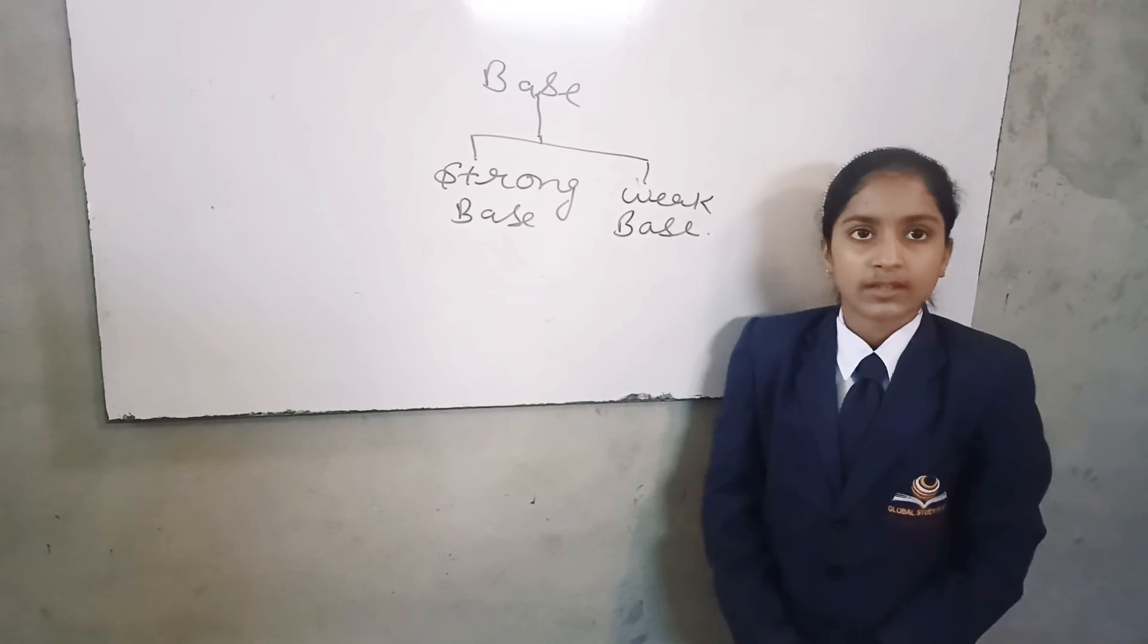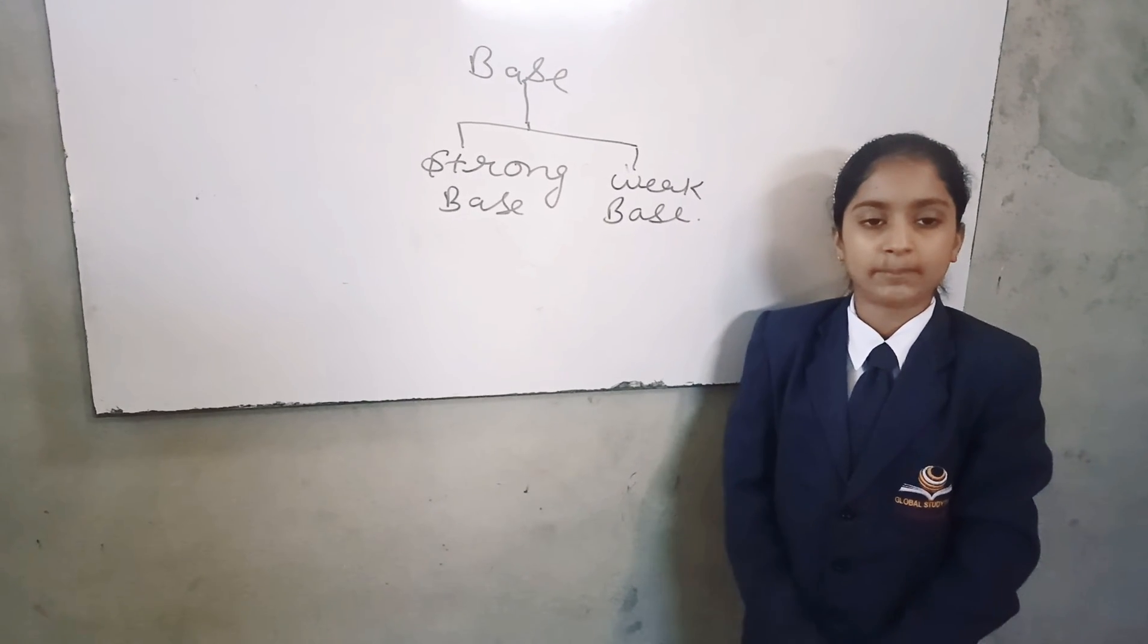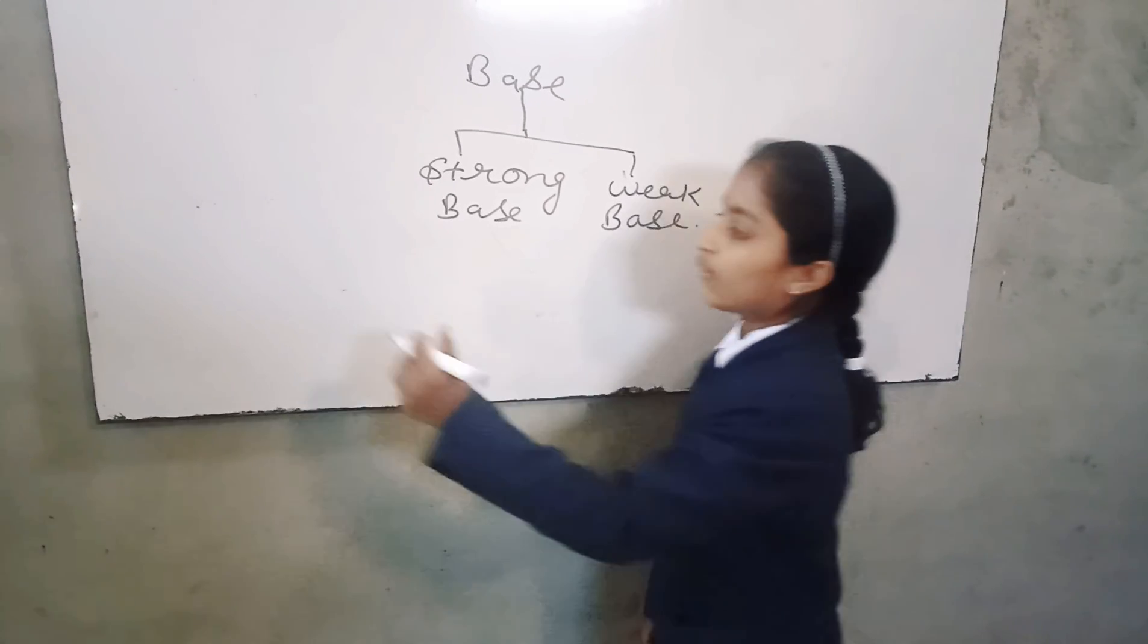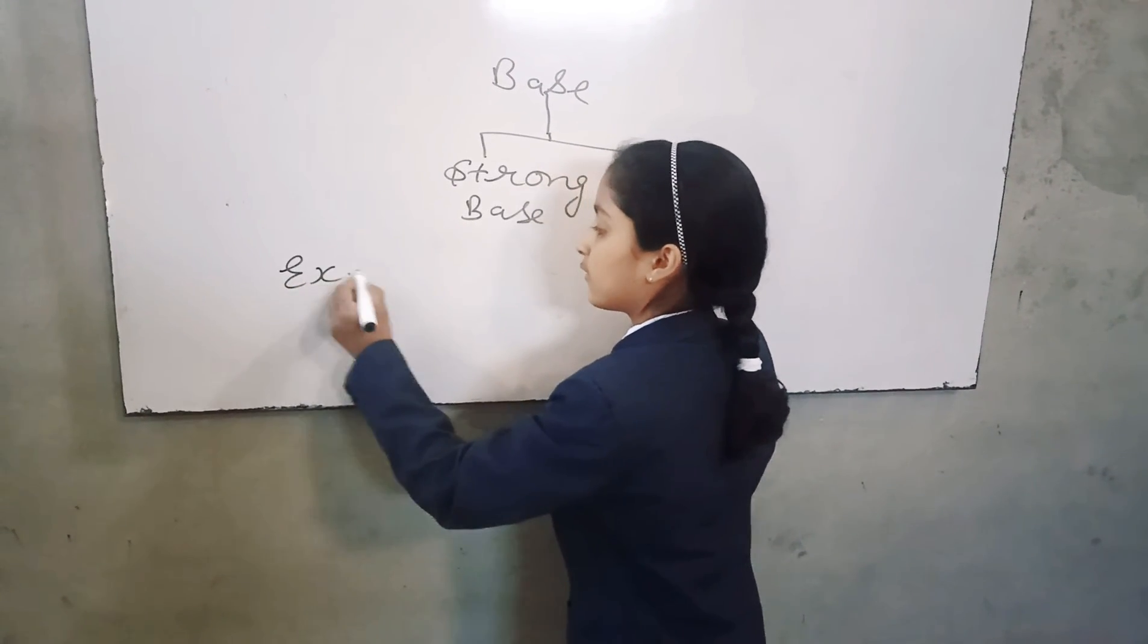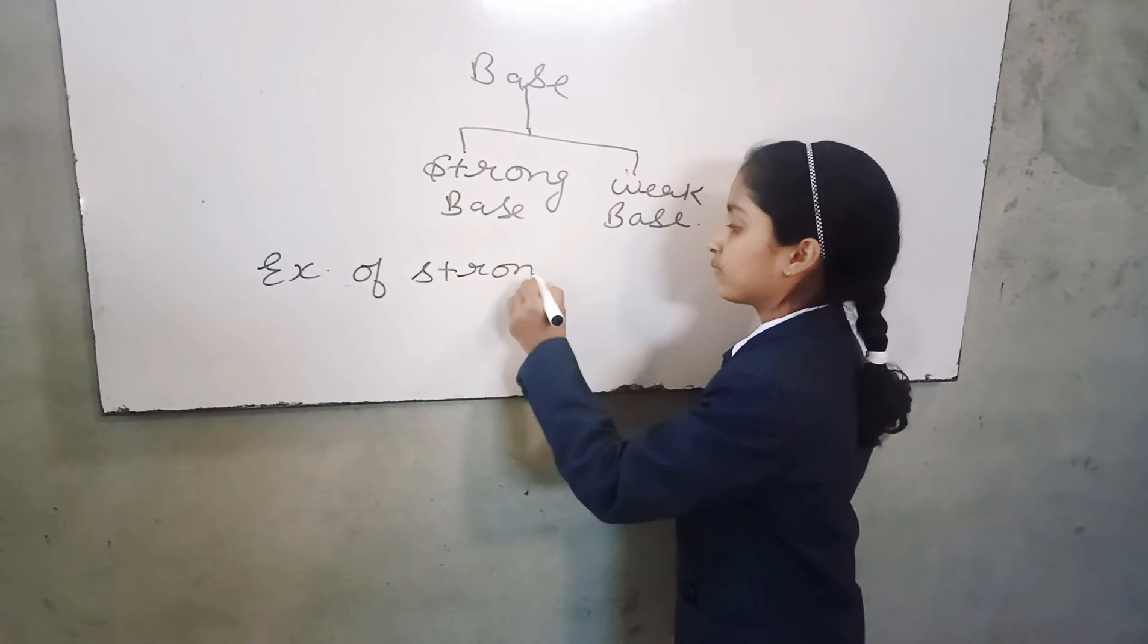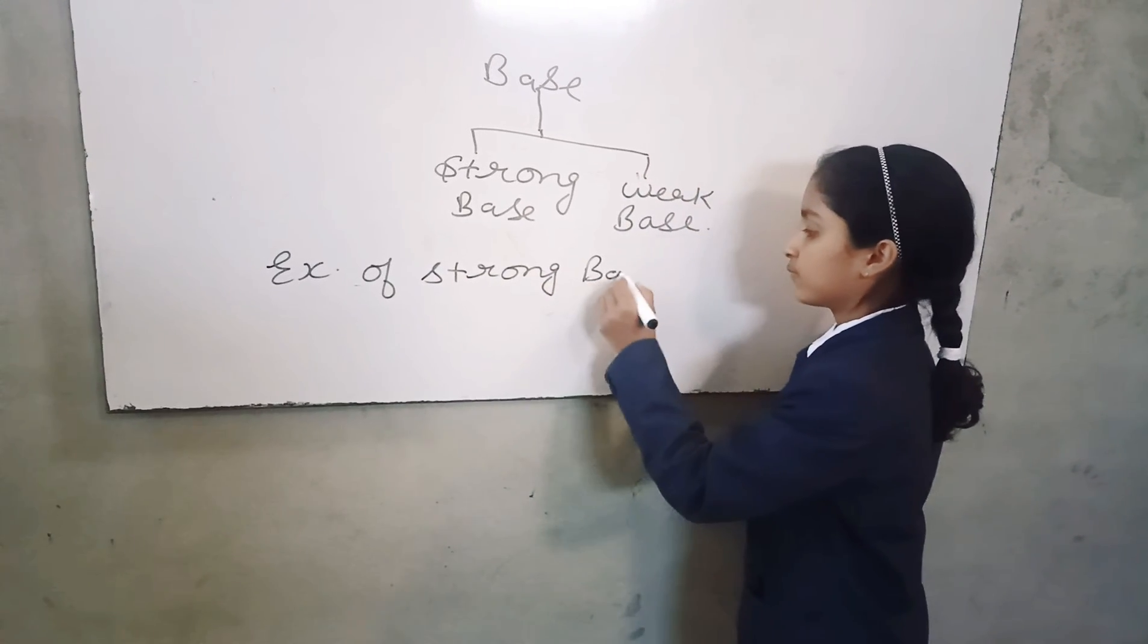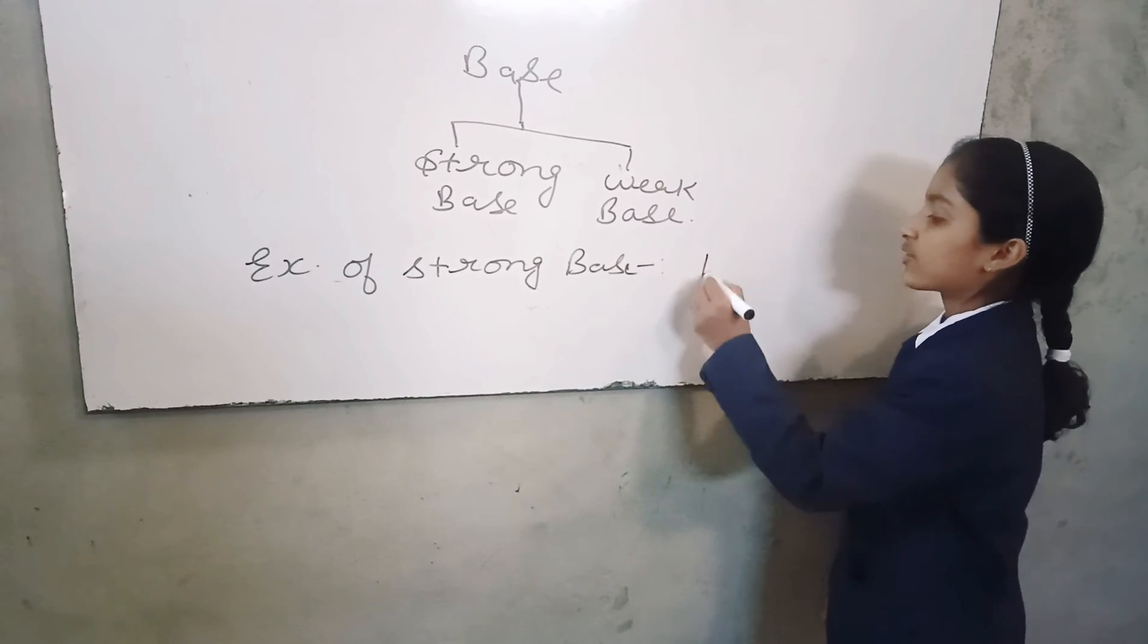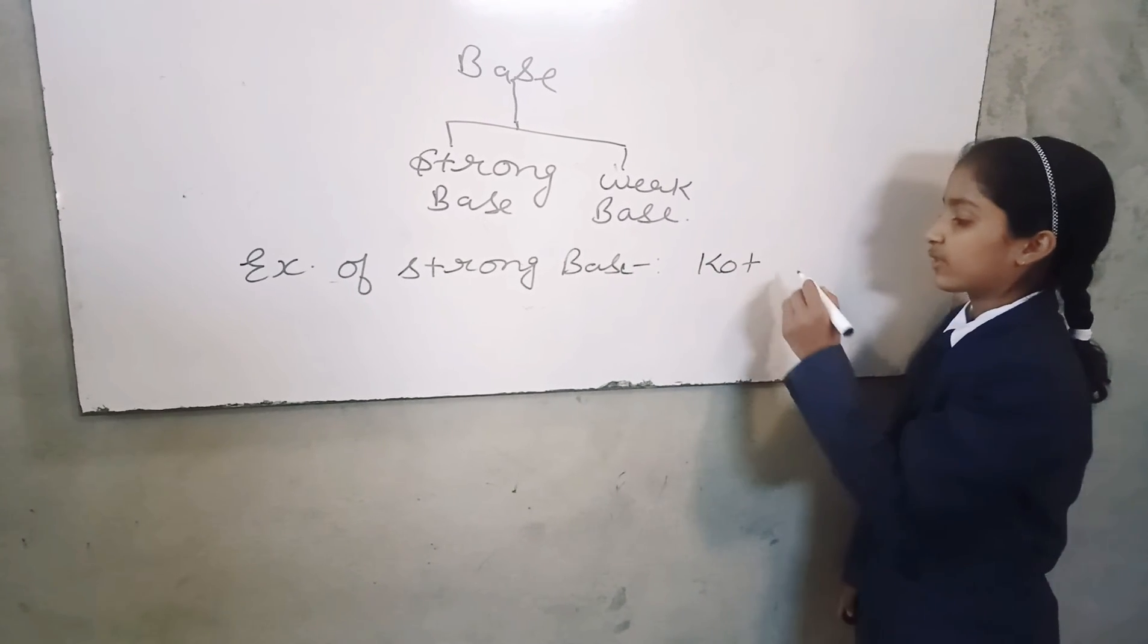Strong base. For example, KOH, potassium hydroxide.